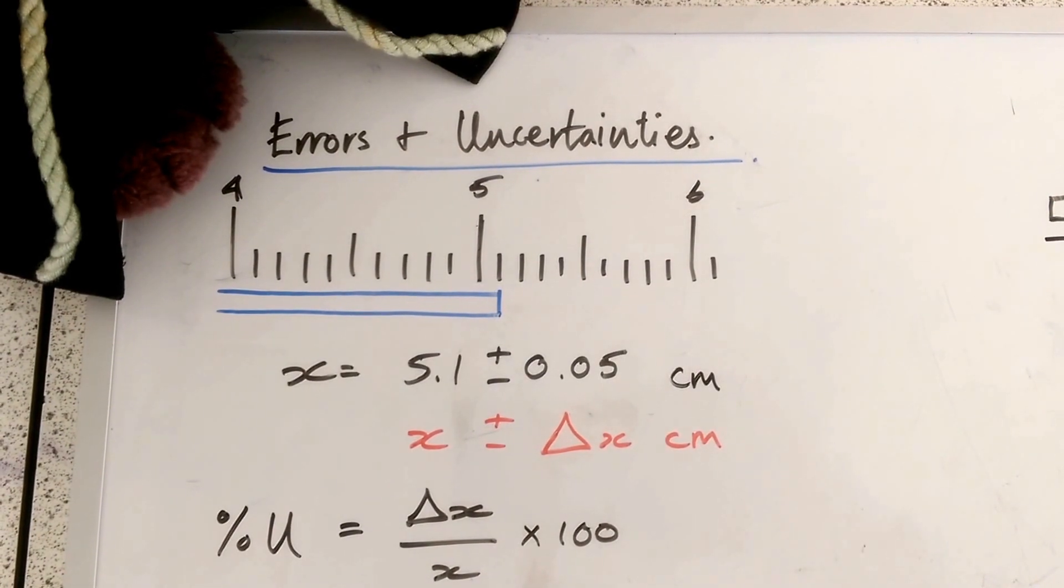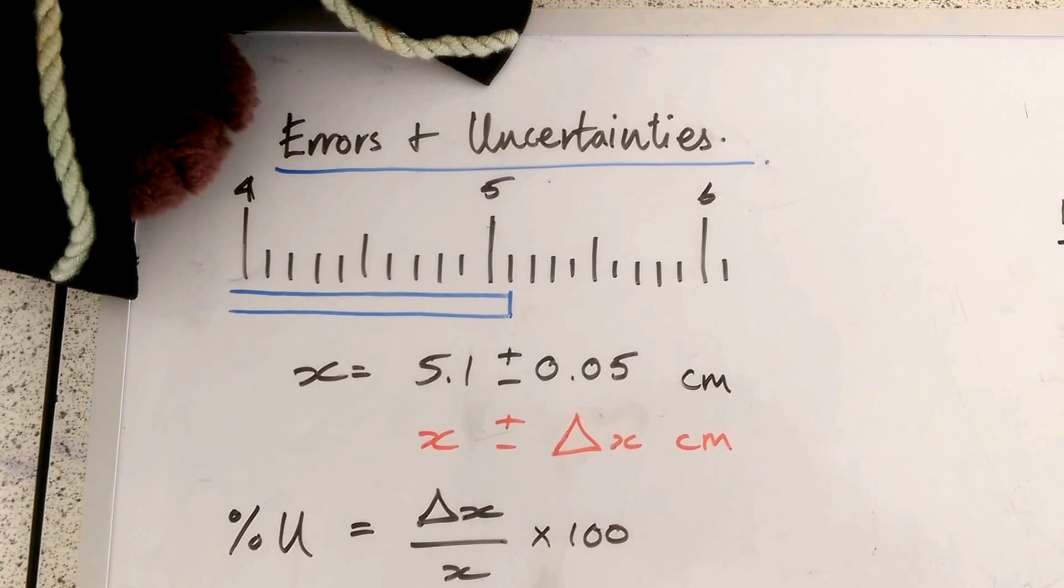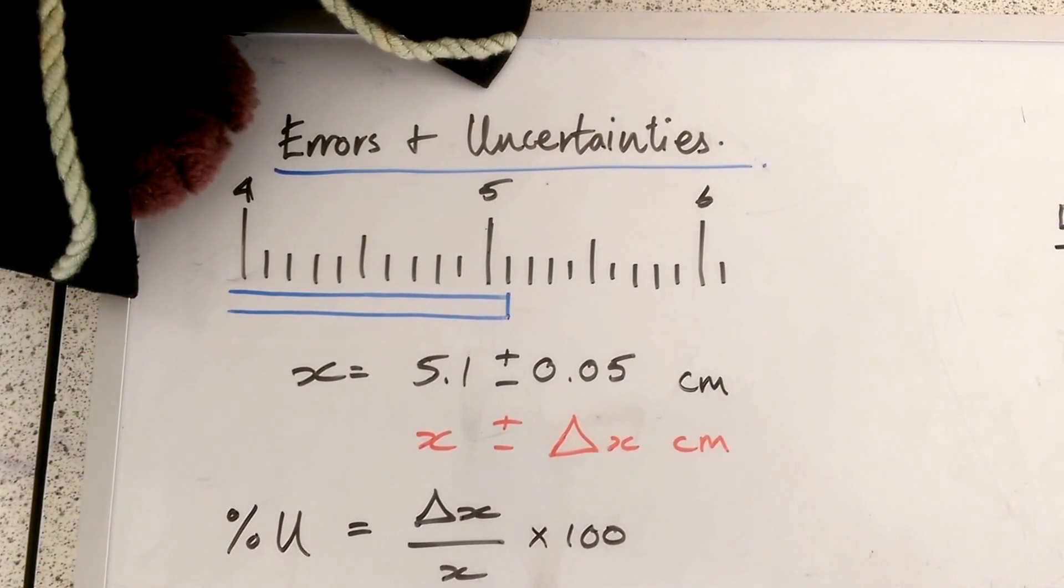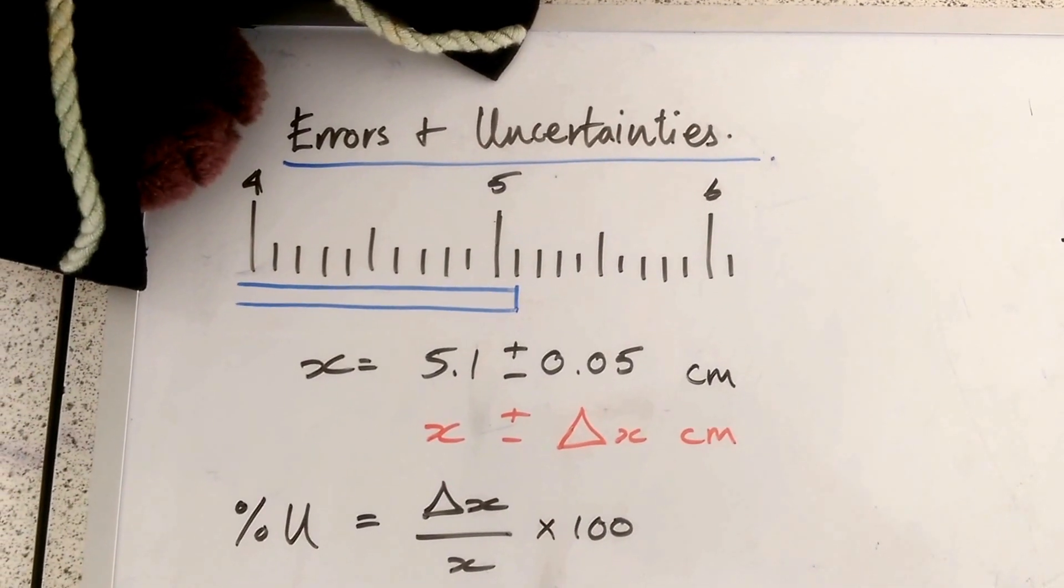So the uncertainty is half a scale division. We're saying that in reality that 5.1 could really be 5.1 up to 5.15 or down to 5.05. It's half a scale division out.